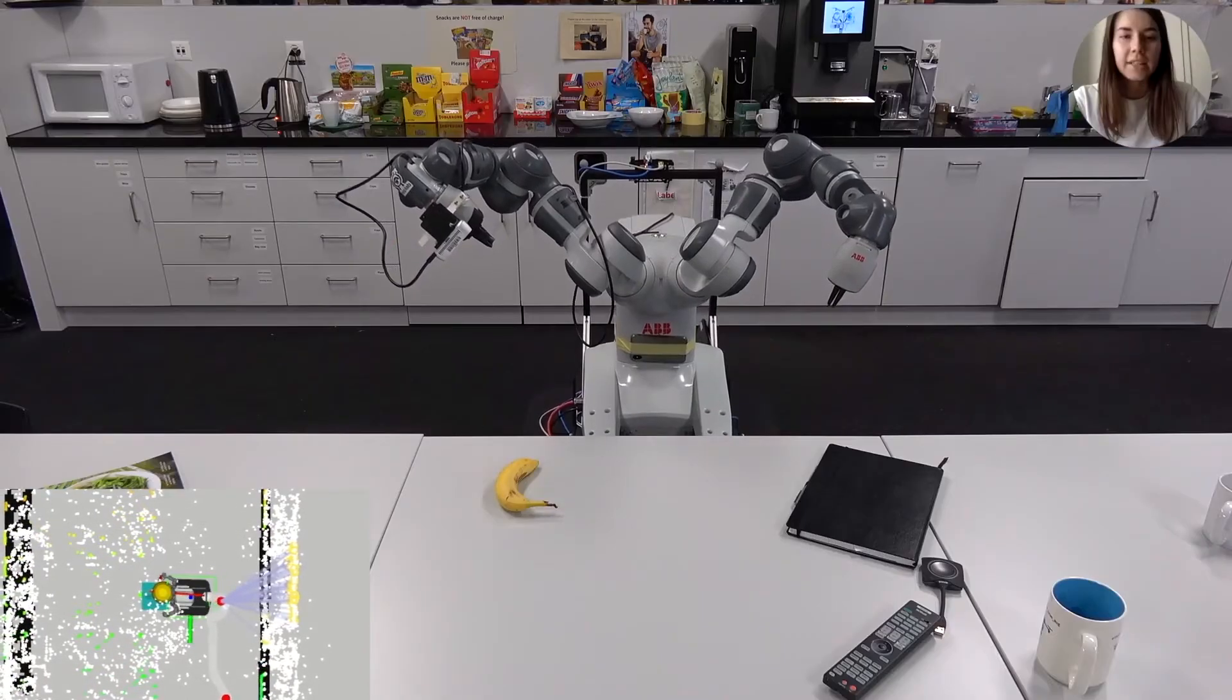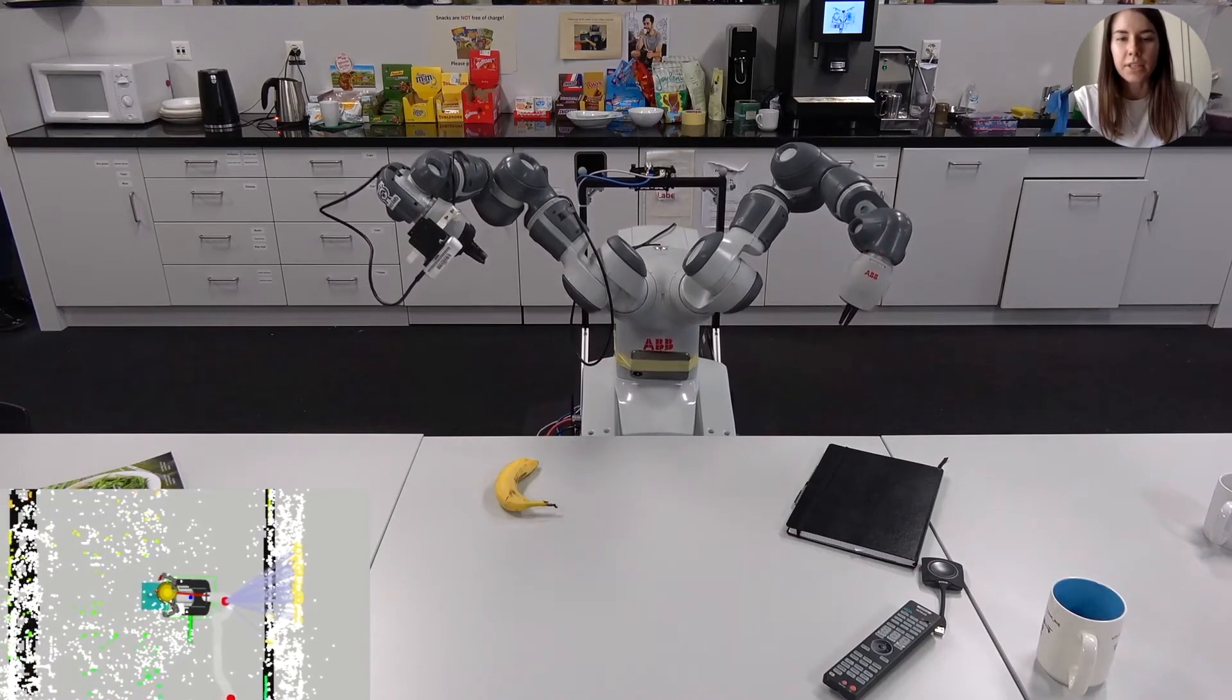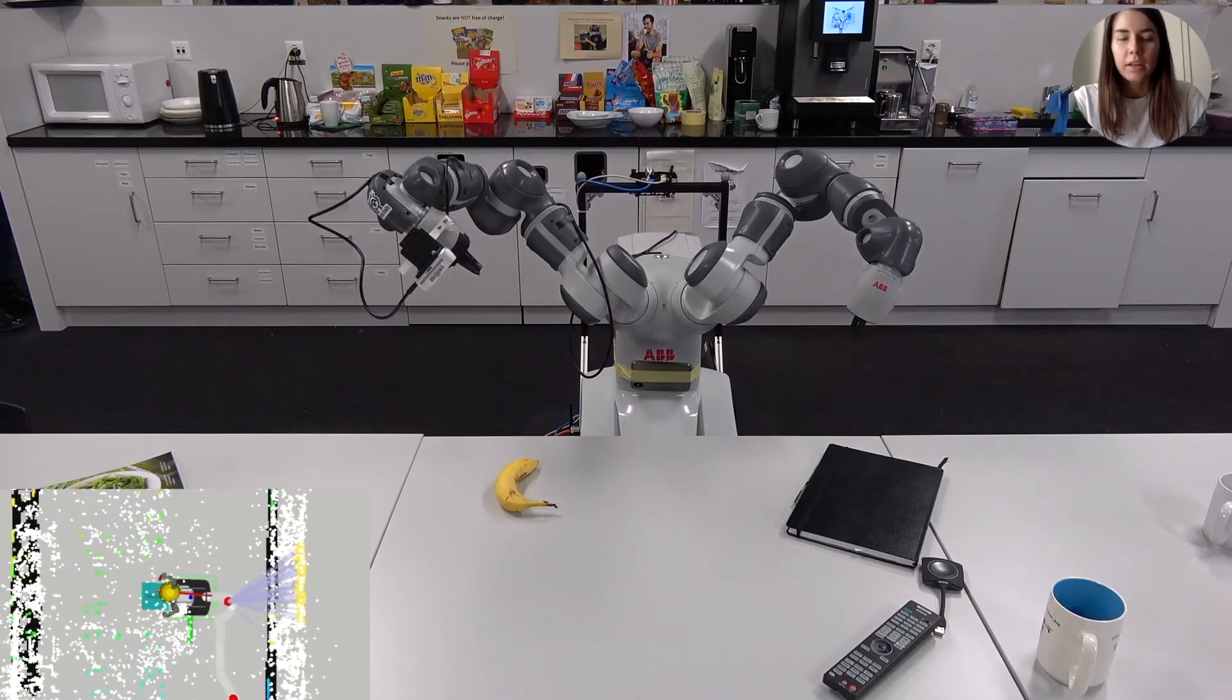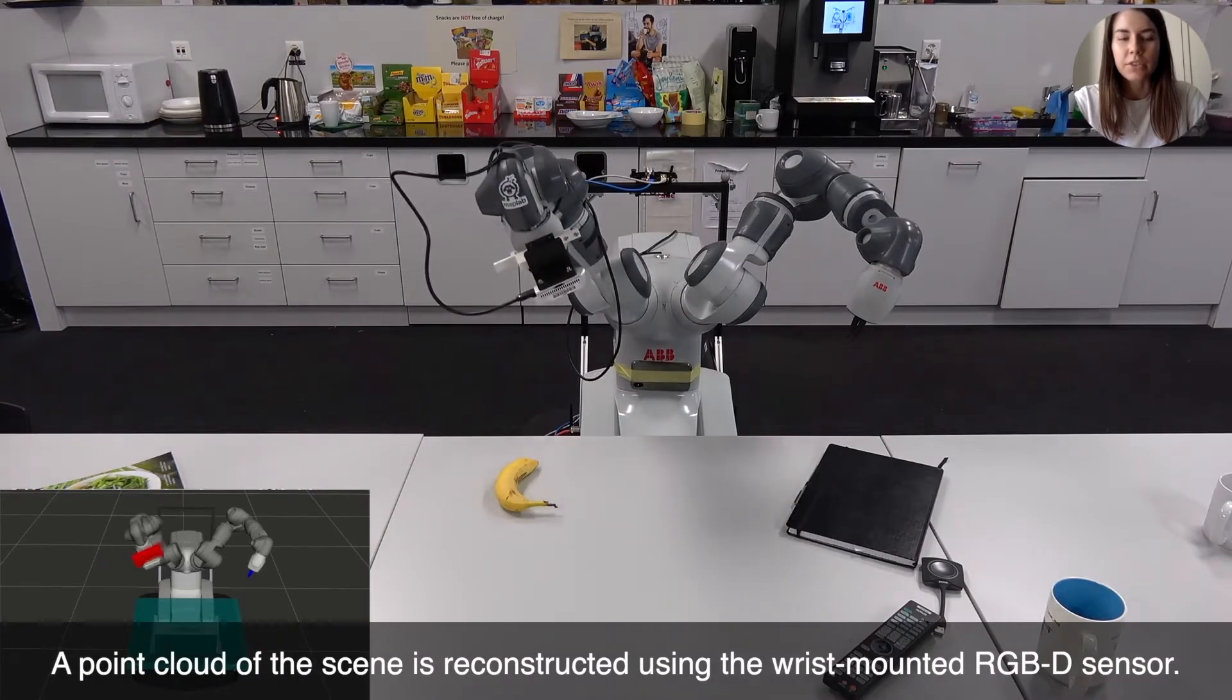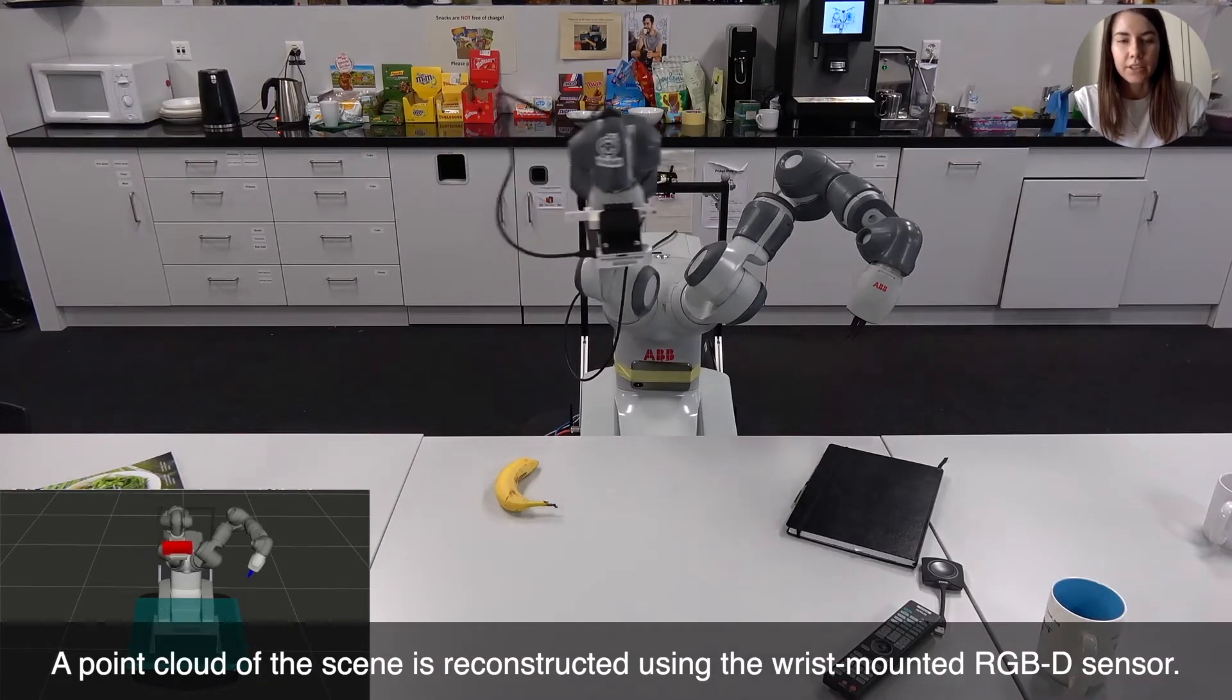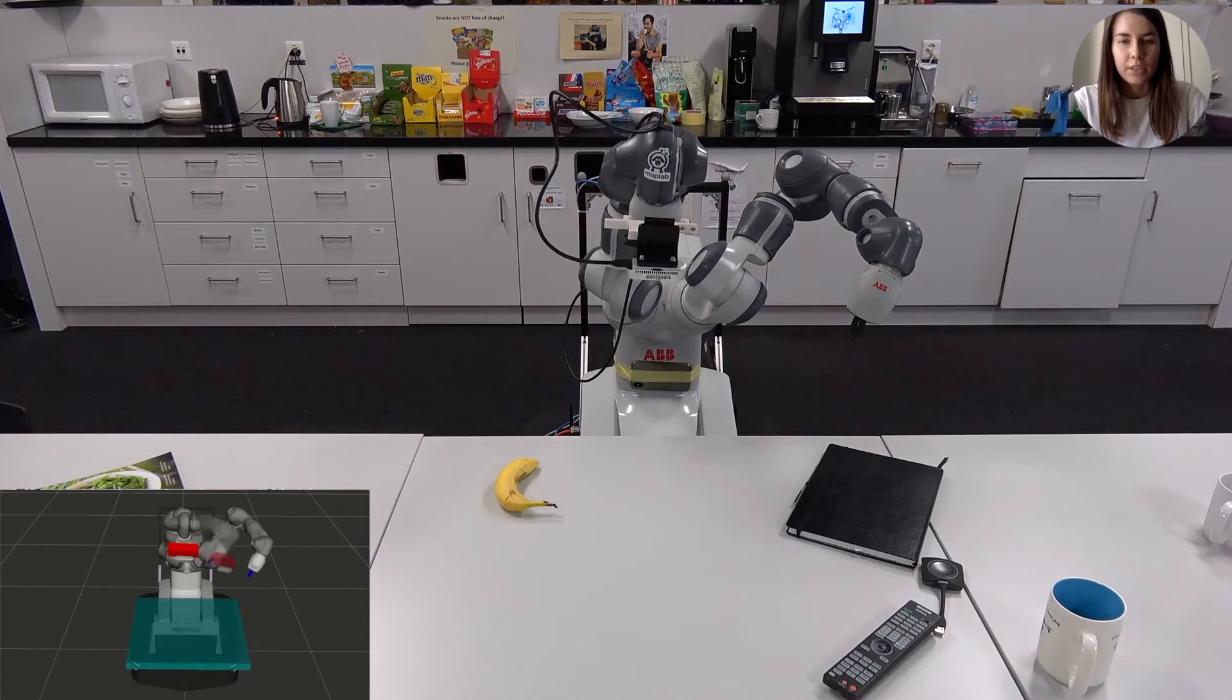To obtain a dense reconstruction of the tabletop scene required for grasp planning, the wrist-mounted RGB-D camera follows a pre-programmed trajectory around the object of interest, and the sensor data is integrated over time.